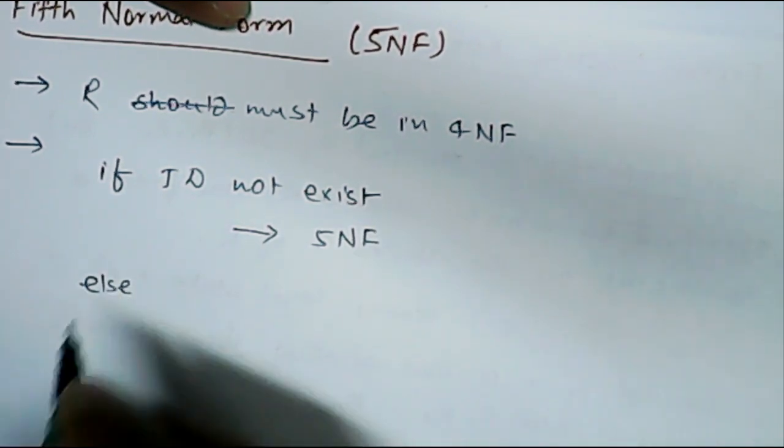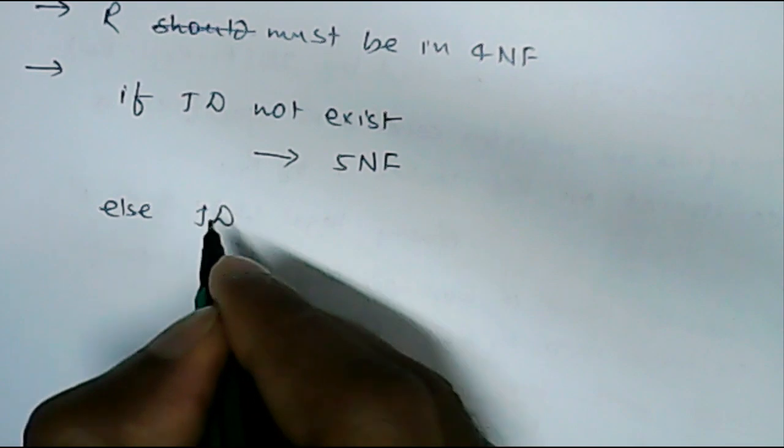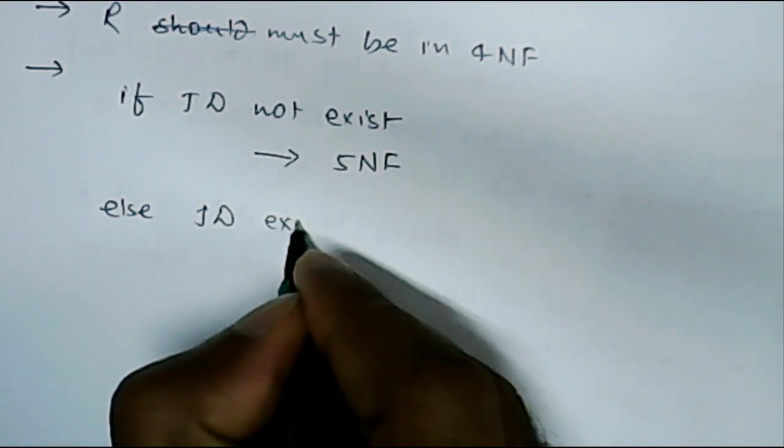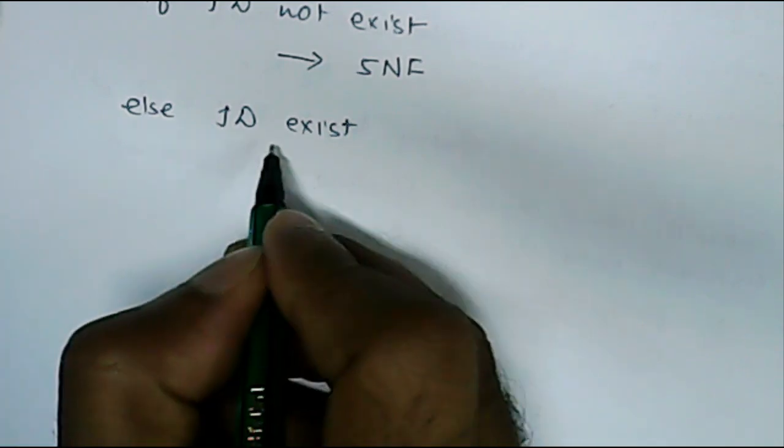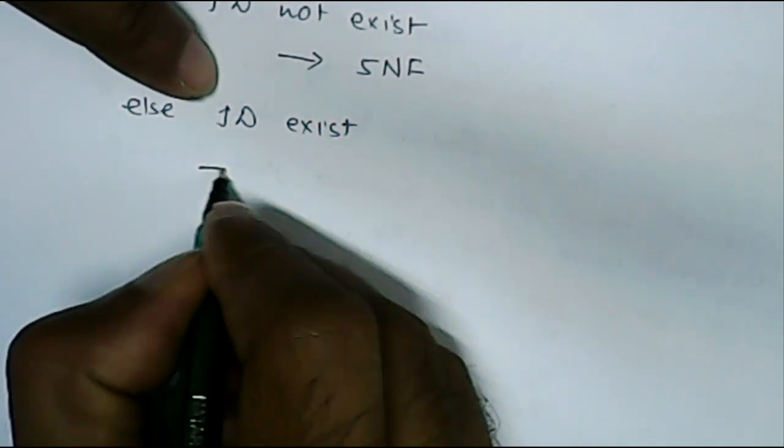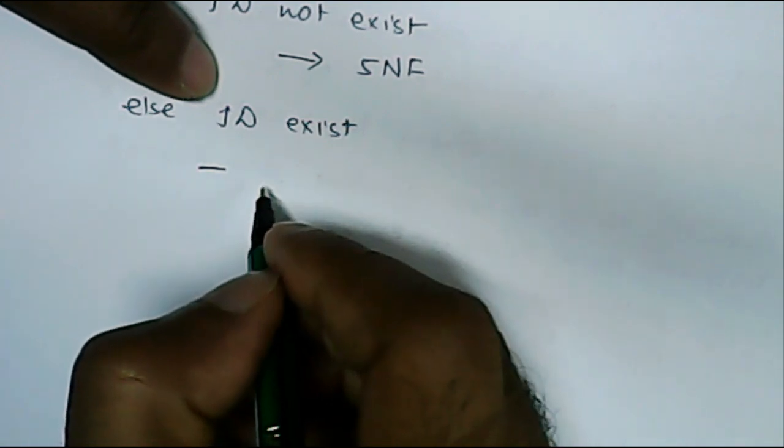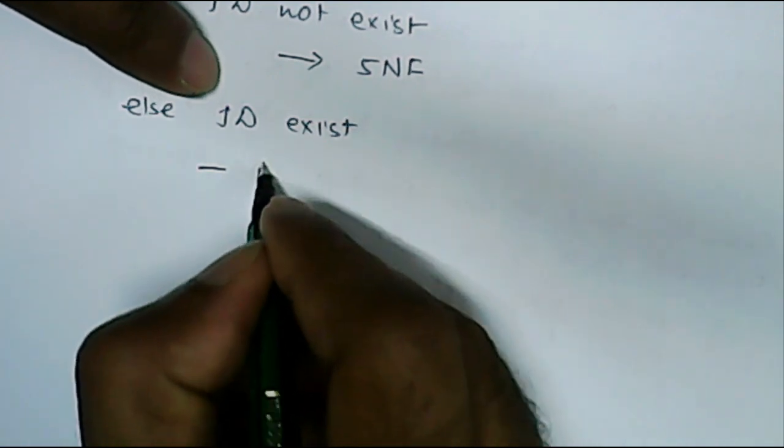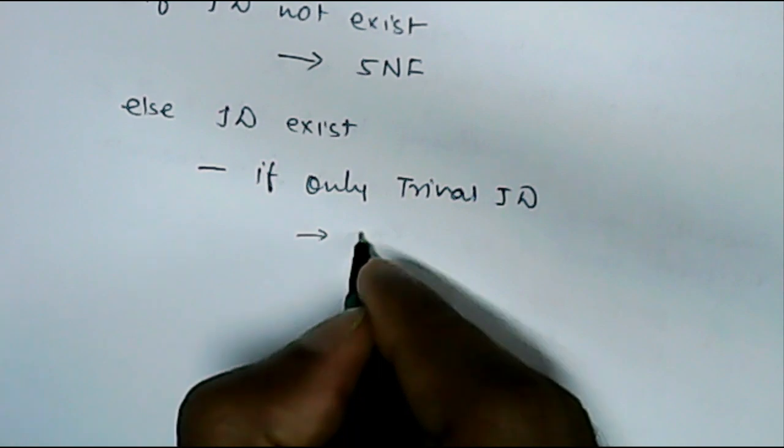Else if joint dependency exists, then we will check whether this is trivial joint dependency. If it is trivial joint dependency, then it will be in 5NF.